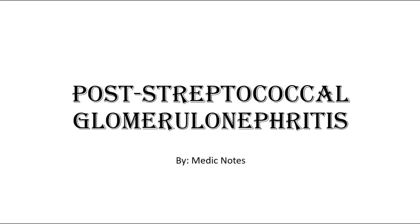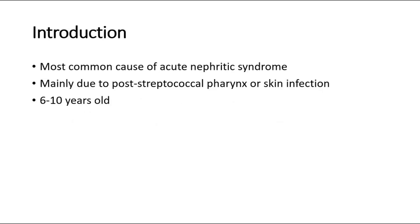Welcome back to another video of Medic Notes. This video will be on post-streptococcal glomerulonephritis, short form PSGN. It is the most common cause of acute nephritic syndrome and is mainly due to post-streptococcal pharynx or skin infection. It is most commonly seen among children who are 6 to 10 years old.